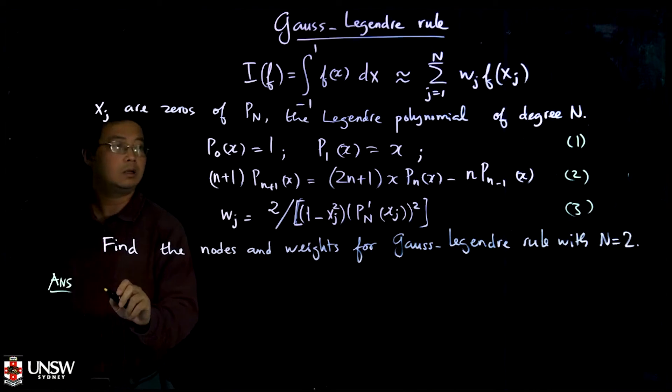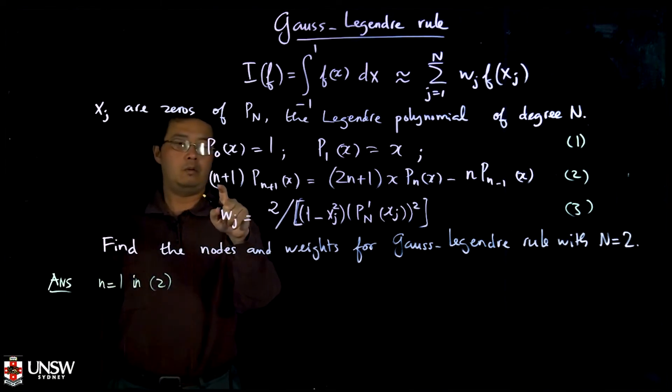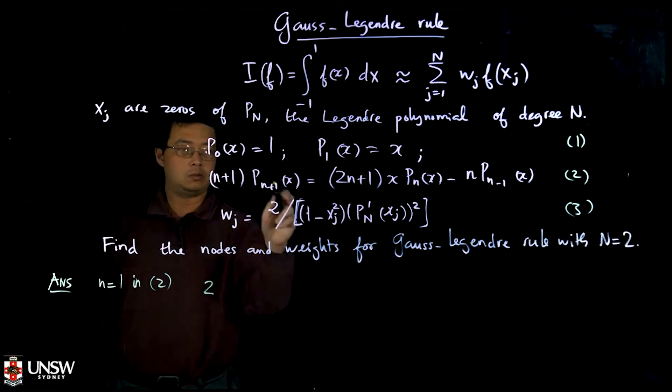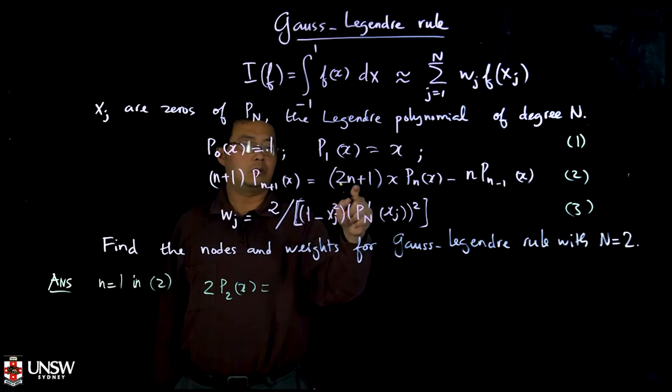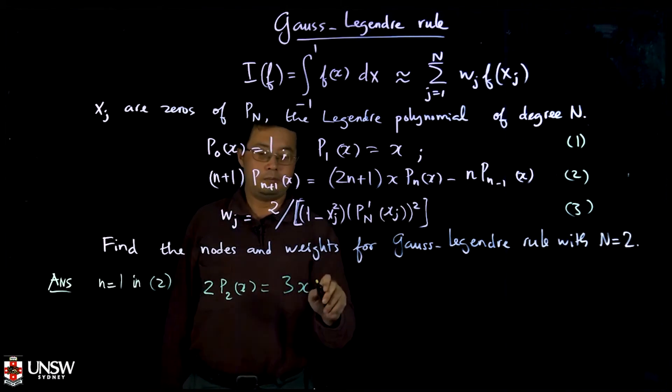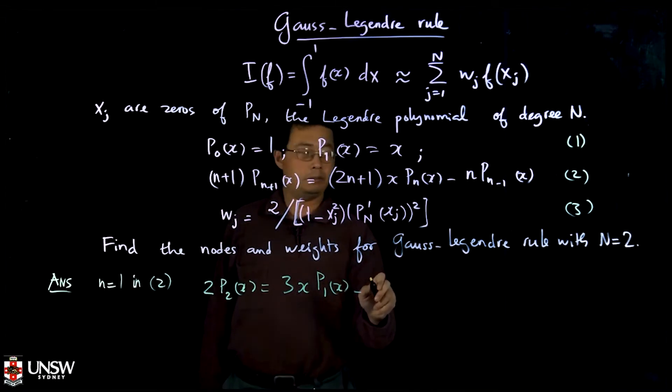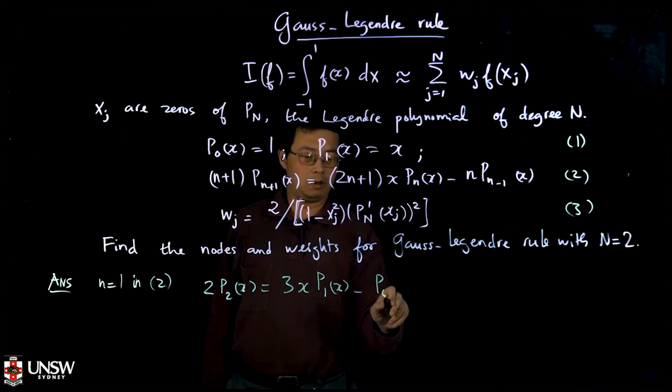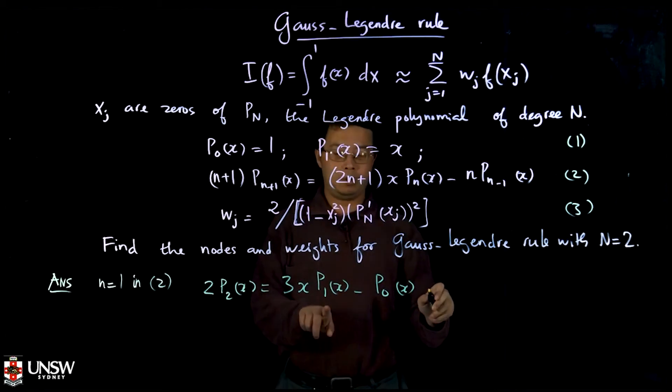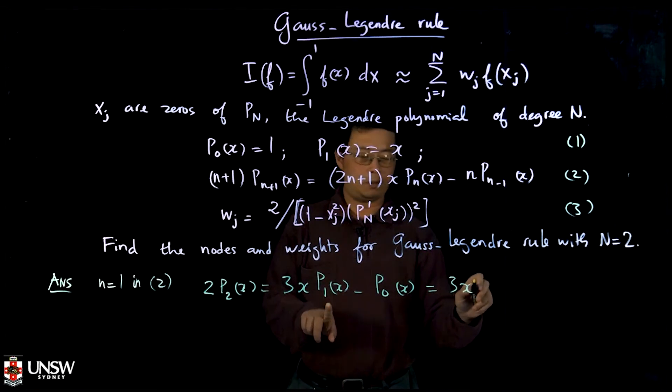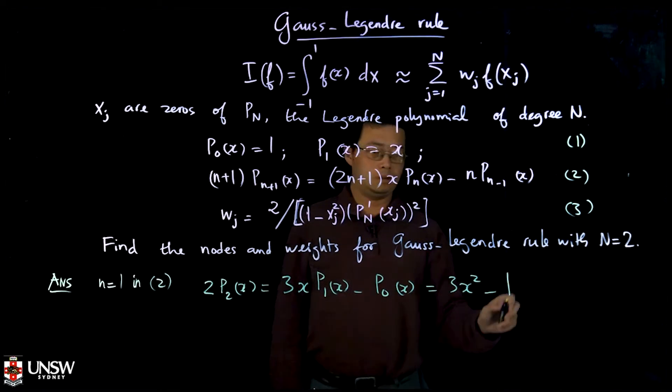If I put n equal one in formula two, then I have one plus one is two, and this one is P₂(x) equal two plus one is three, three x, and P₁(x) minus, so n is one and then Pₙ₋₁ is P₀(x). Now you can use formula one to put in P₁ equal x, so you get three x times x equals three x square, and minus P₀ is one.